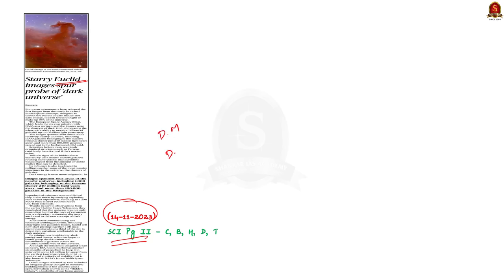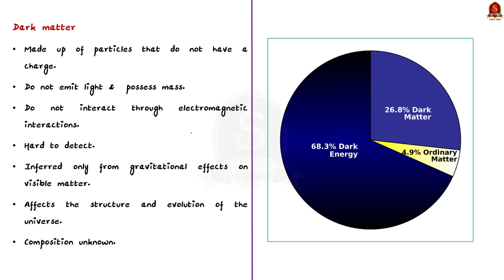Before that, let us have a basic understanding. The visible universe makes up only 5% of all matter. Dark matter and dark energy make up the remaining 95% of the universe. Now let us get into discussion and first see about dark matter.